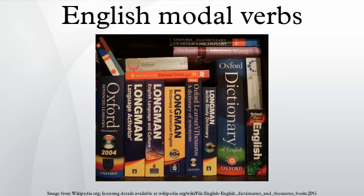Deduction: in English, modal verbs such as 'must', 'have to', 'have got to', 'can't', and 'couldn't' are used to express deduction and inference. We use modal verbs to state how sure we are about something. For example: 'You're shivering — you must be cold.' 'Someone must have taken the key, it is not here.' 'I didn't order ten books — this has to be a mistake.' 'These aren't mine — they've got to be yours.' 'It can't be a burglar — all the doors and windows are locked'.